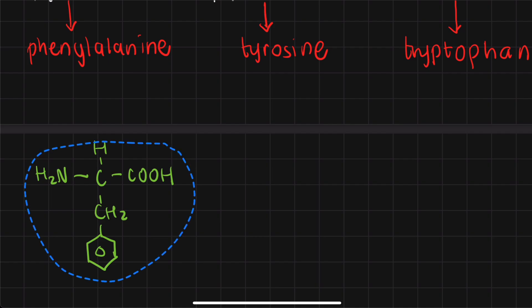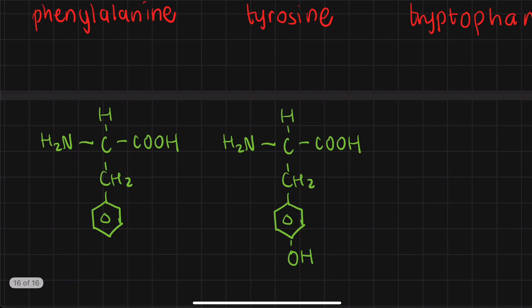But now, if I get tyrosine, or if I want to draw tyrosine, it's almost the same except this time, we have a hydroxyl group. Remember, that is the only difference. So if we think about it, hey, tyrosine is just, again, a hydroxy version of phenylalanine.